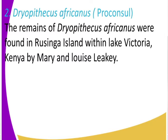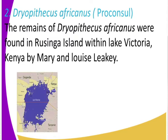And who found the Diopithecus africanus? Who first discovered it? It was discovered in Kenya by Mary and Louis Leakey. These are the first people who discovered Diopithecus africanus, that it existed, and it was found in Rusinga Island in Lake Victoria. Now we can get to see Lake Victoria — that is Lake Victoria.